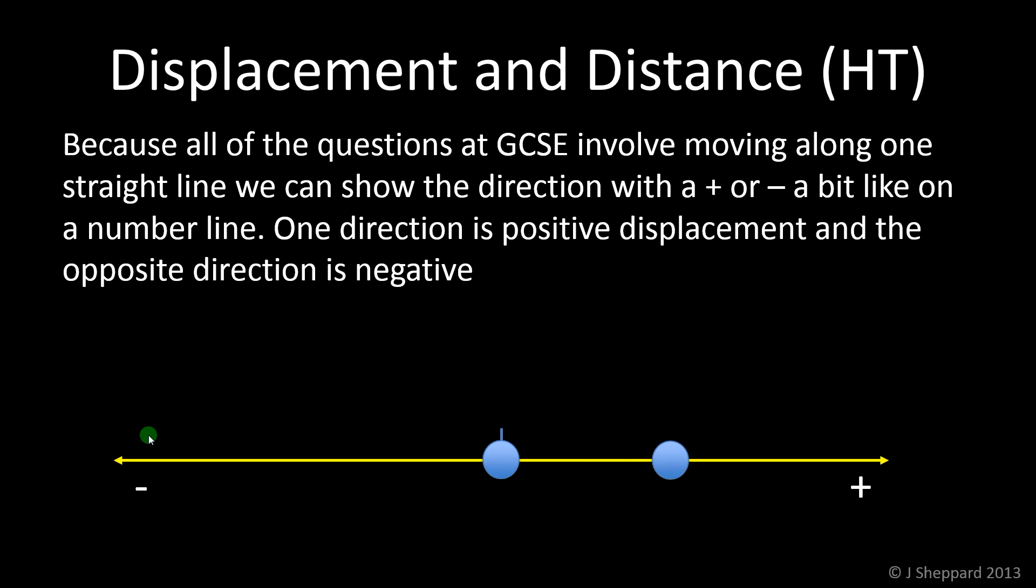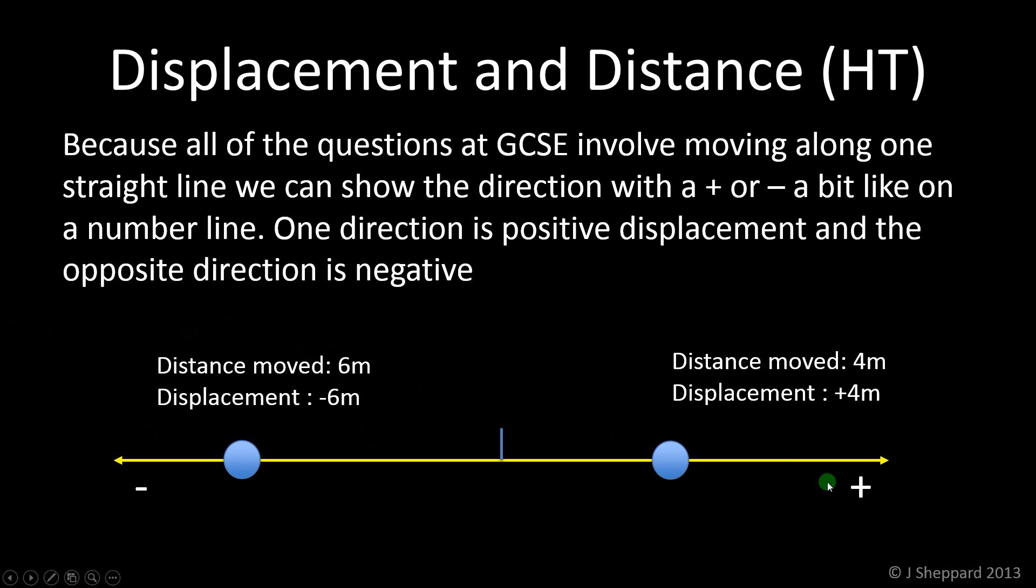So, for example, that first blue blob has moved a distance of 4 metres and its displacement is plus 4 metres because it's moved in the plus direction. The second blue blob, it's moved a bit further, it's moved 6 metres, but the displacement, because it's moved the opposite way to the first one, is minus 6 metres. So, you see, there's no plus or minus in the distance part. We don't care which direction, we just care how far. But, in the displacement, there's a plus or minus because it tells us the direction as well. And all you have to worry about at GCSE is plus for one way, minus the opposite way.